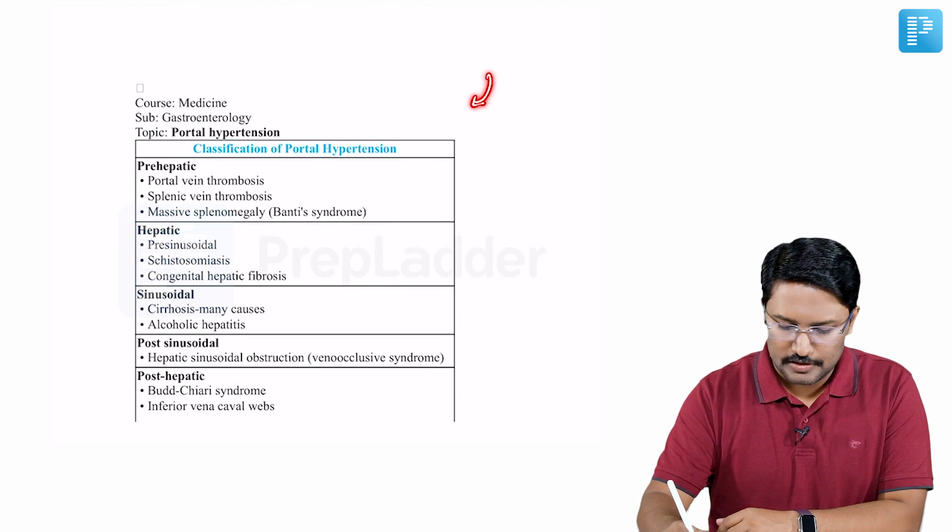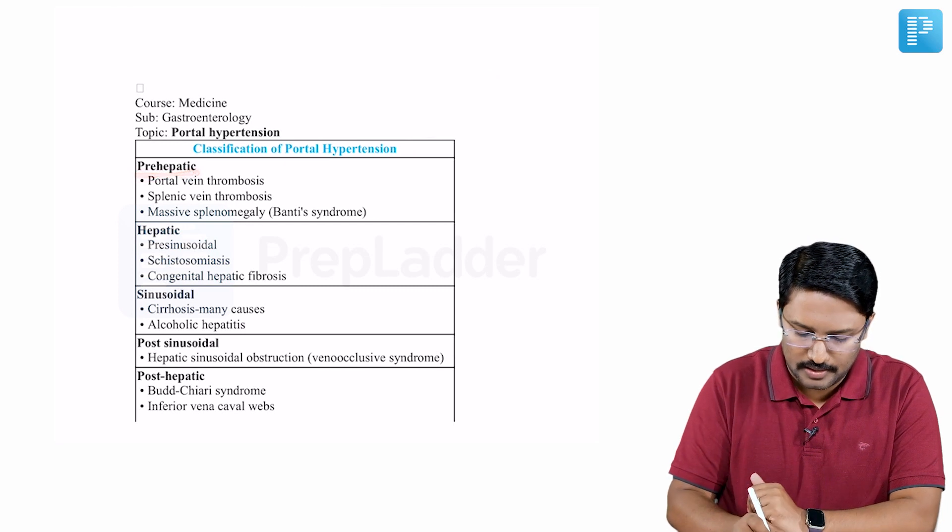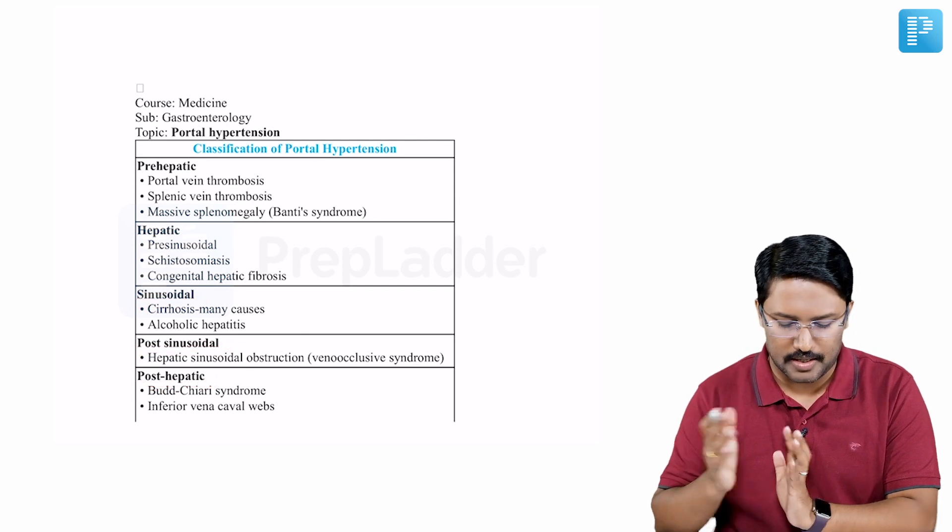So this file is from the Treasures app and you can see the classification of portal hypertension. It can be classified as pre-hepatic, hepatic and sinusoidal, post-sinusoidal, and post-hepatic.